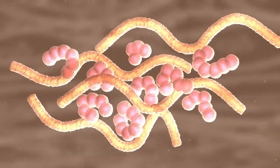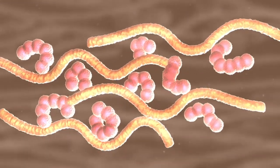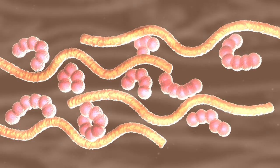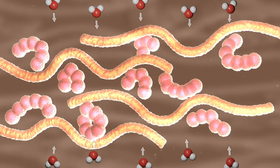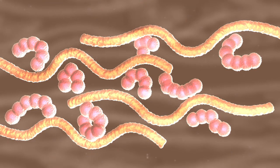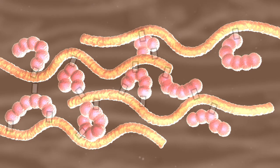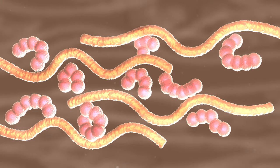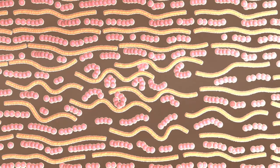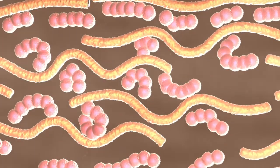Due to this unfolding, the gluten proteins come together and associate by both weak hydrophobic interactions and stronger disulfide bonds between adjacent gluten proteins. These interactions tie the gluten proteins together into larger networks.